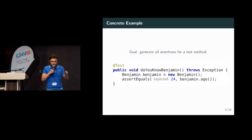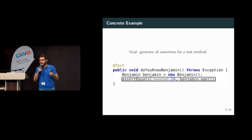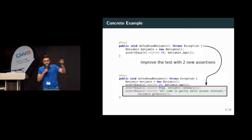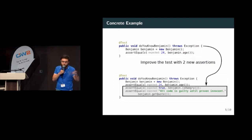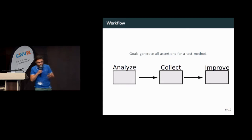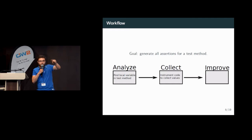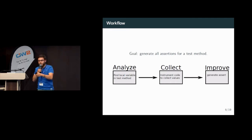I want to generate all the assertions and obtain a new test method with two more assertions. To do this, I propose a workflow in three steps: analyze, collect, and improve. In the analyze step, we find the local variable inside the test. Then we instrument the code to collect all the values of the local variable. Finally, we generate assertions in the test.